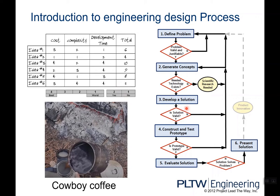We use a grinder to grind the coffee bean into small particles, then use hot water to steep it. Now it's time to build our first prototype. We first set up a campfire on the ground. We grind the coffee bean into small particles, put it in a pot, add some water, and put the pot on top of the campfire. When the water reaches its boiling point, we remove it, let the coffee grains drop off, then pour our first cup of coffee.